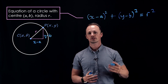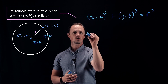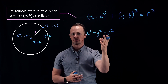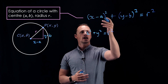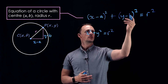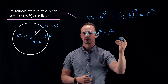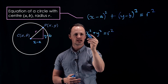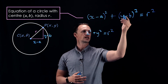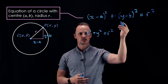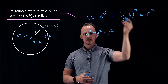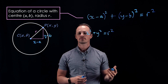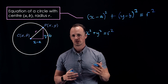An alternative way to arrive at the same equation is to start with x² + y² = r² for a circle centred at the origin, and then translate it a units in the positive x direction and b units in the positive y direction. To translate by a units in the x direction we replace x by x minus a, and to translate b units in the y direction we replace y by y minus b, arriving at the same equation. So that's where the equation of a circle comes from. Let's now have a look at some ways of using that equation.